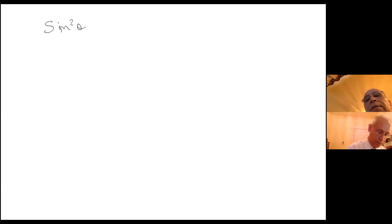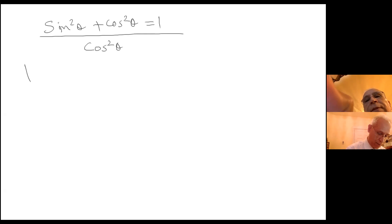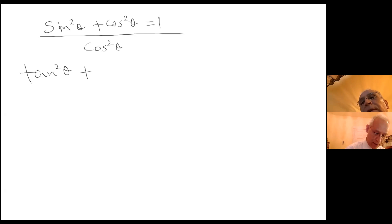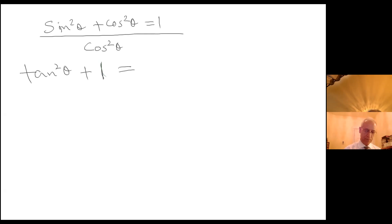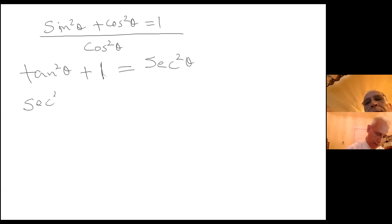Same thing on the next page: if I have sine squared theta plus cosine squared theta equals one, and we divide everything by cosine squared theta, then sine squared over cosine squared is tangent squared of theta, plus cosine squared over cosine squared is just one, equals one over cosine squared, which is secant squared of theta. I can rearrange and claim that secant squared of theta minus tangent squared of theta equals one.